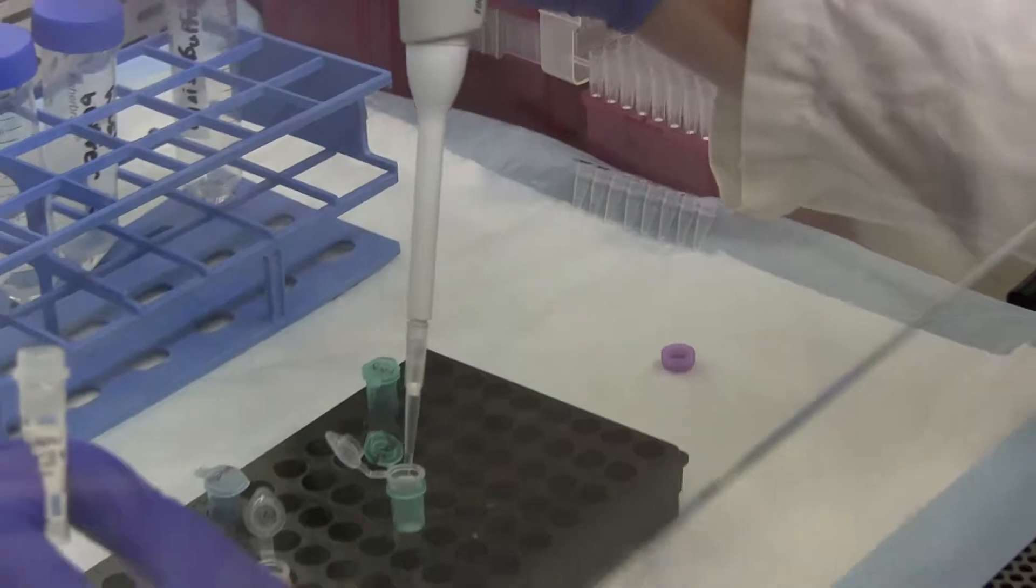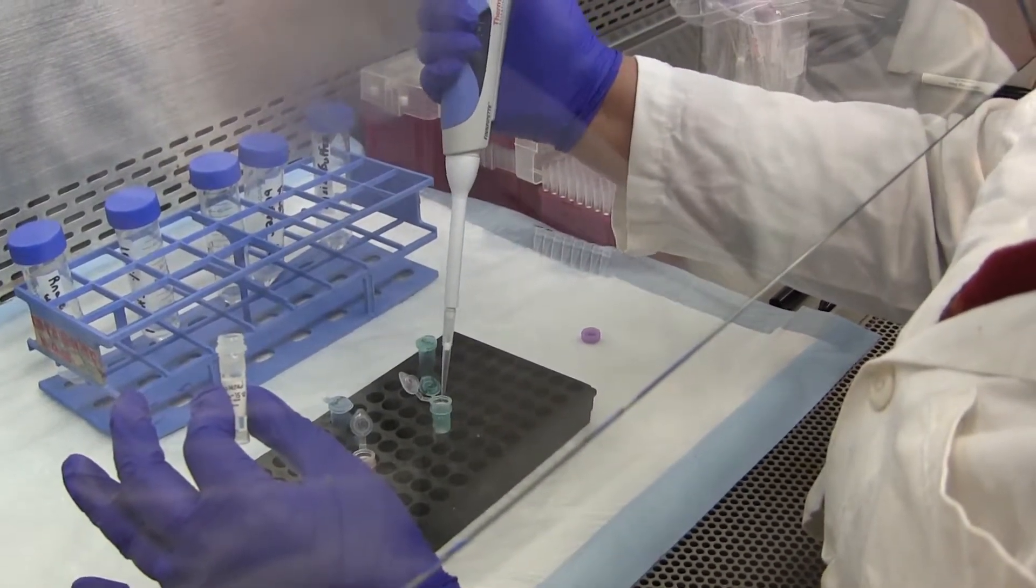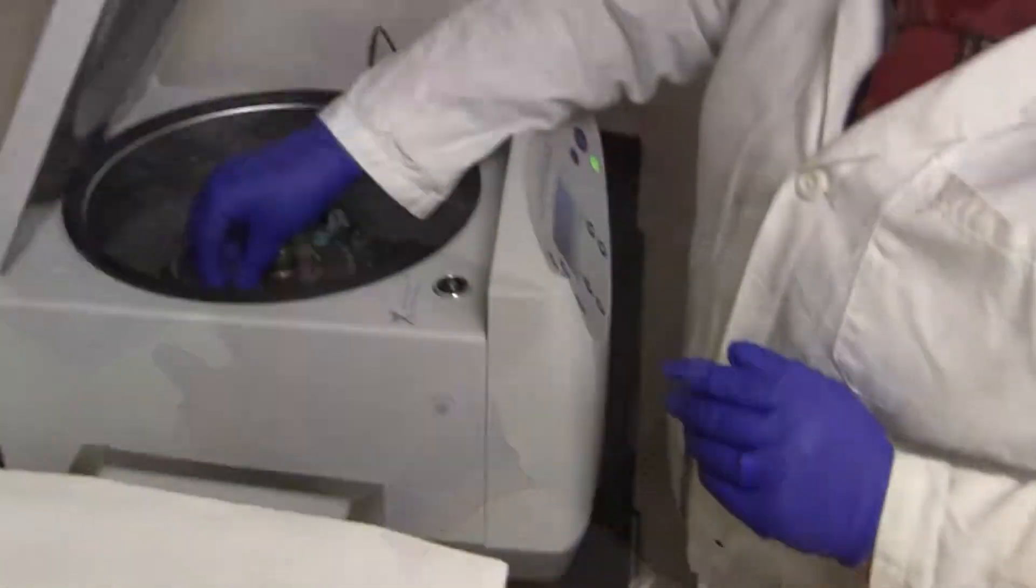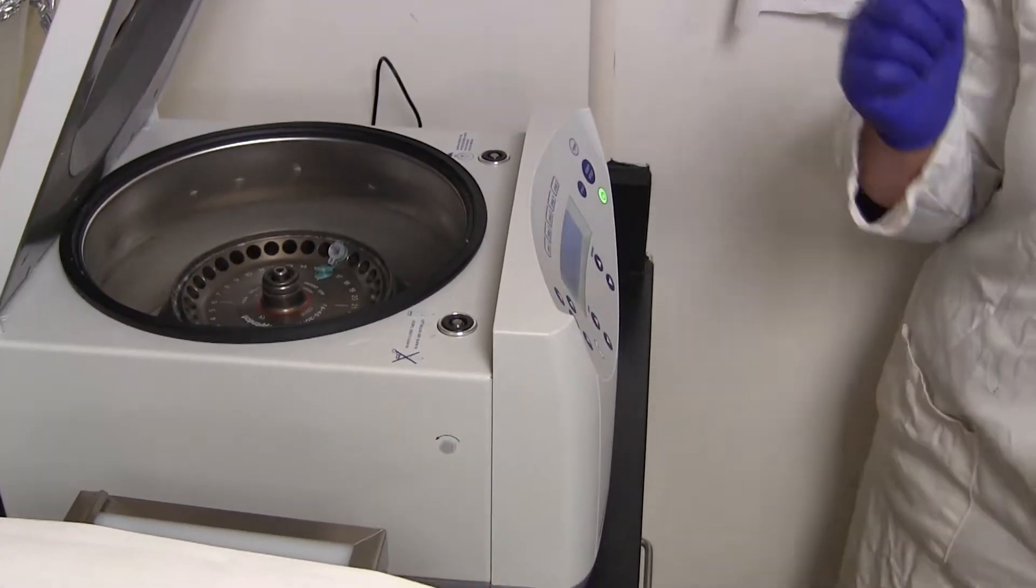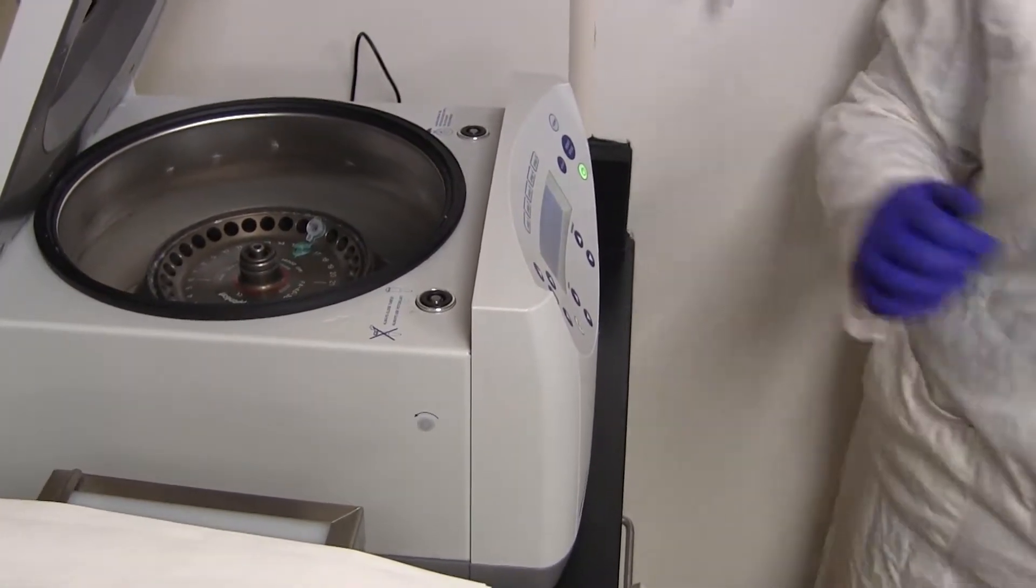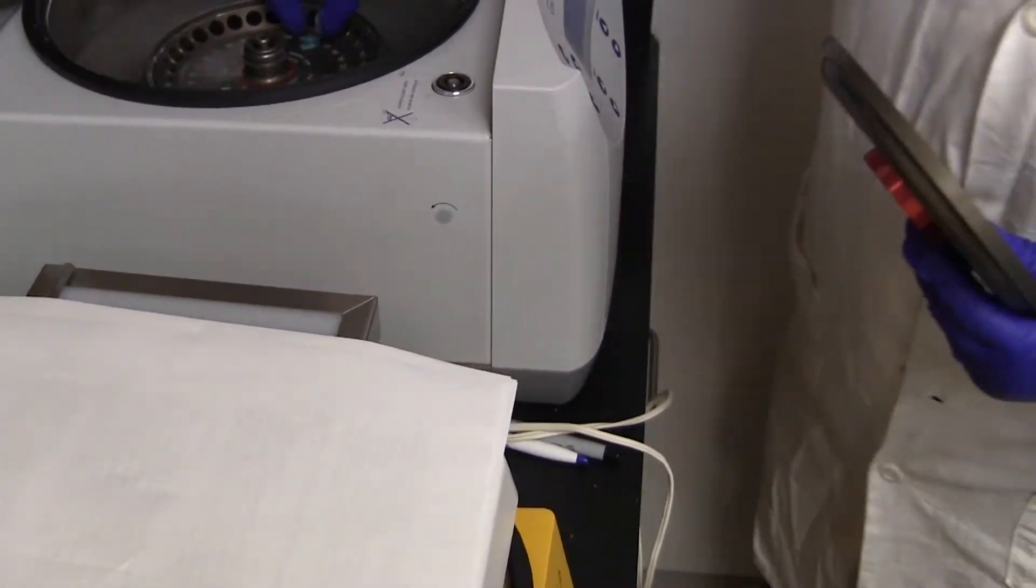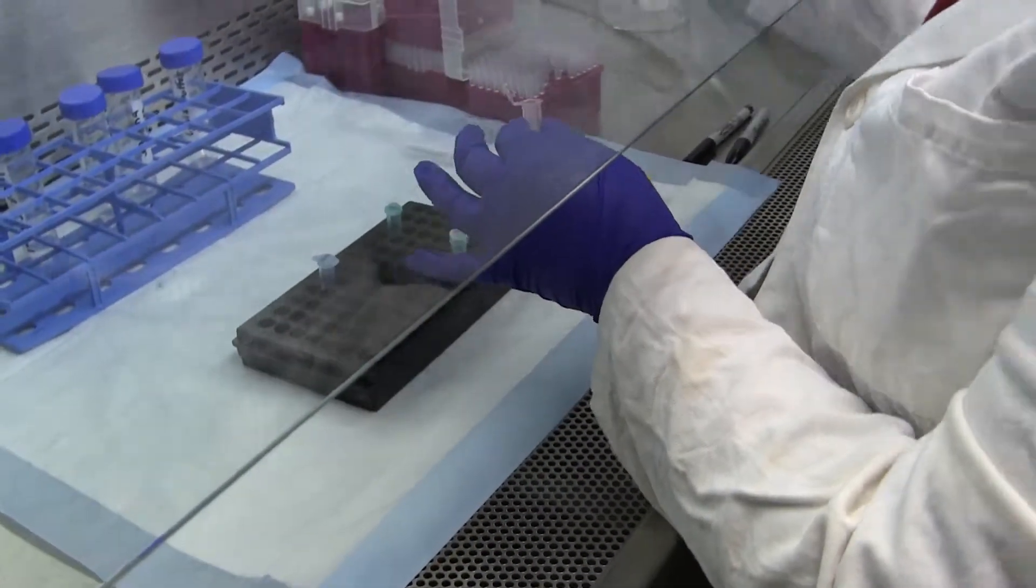And careful again, you don't want to touch the column when you add it. And so then we're going to let it sit for one minute. And so you see the tubes are put into the centrifuge with the caps pointing inwards, so that will allow you to still be able to close the centrifuge lid.